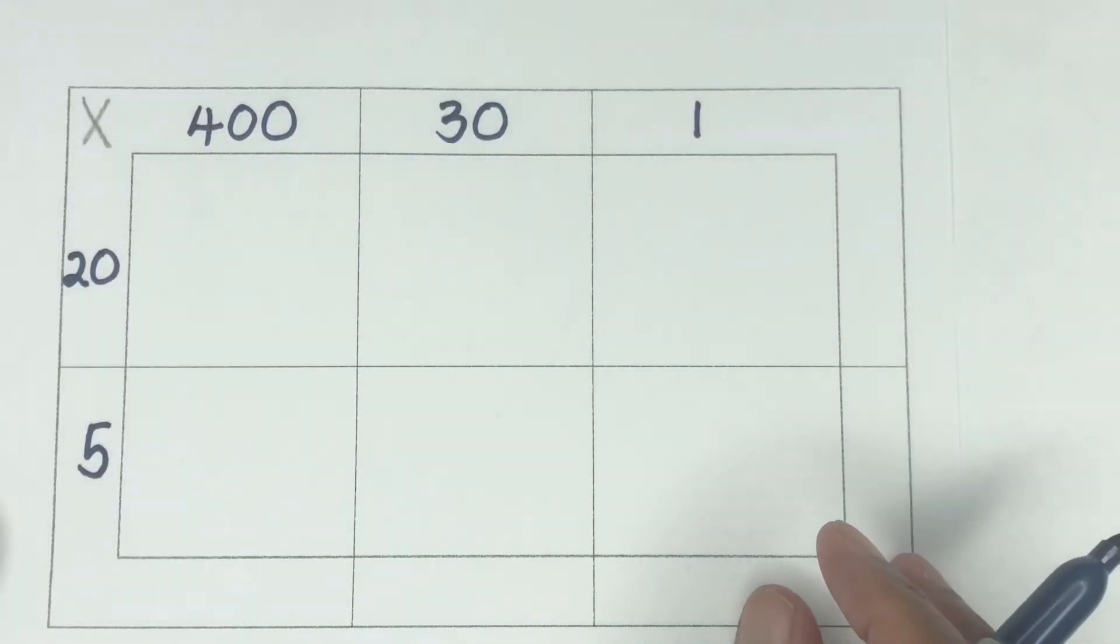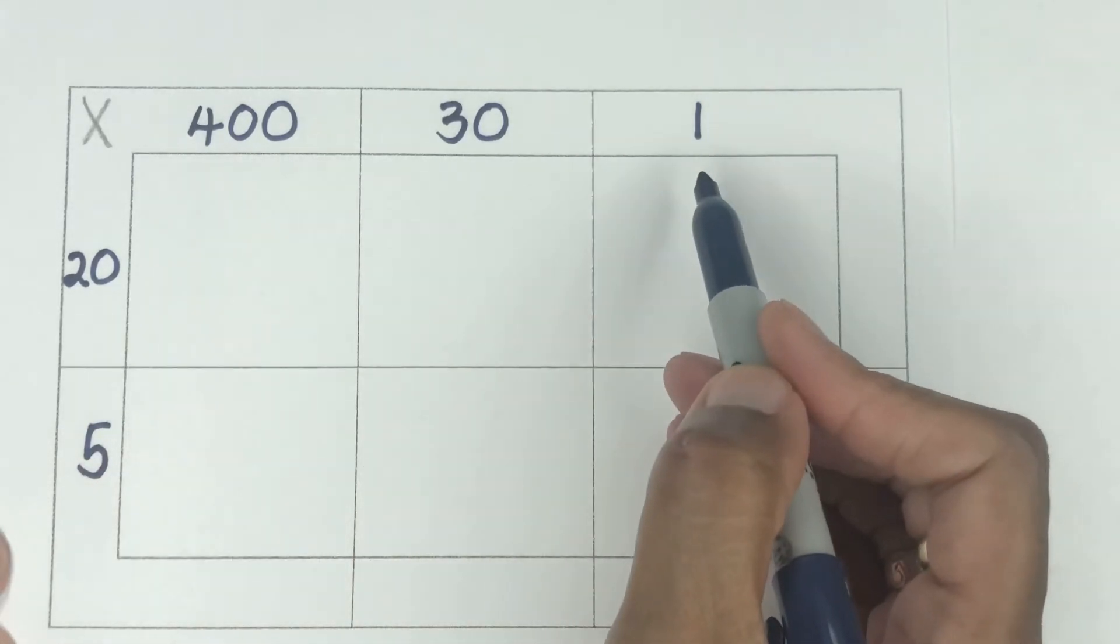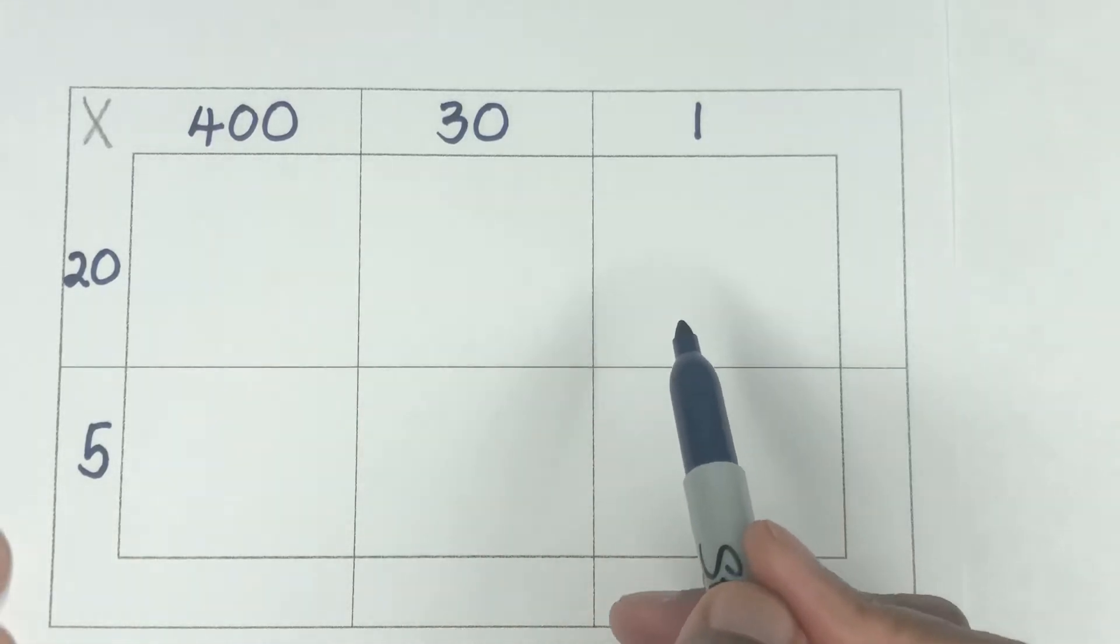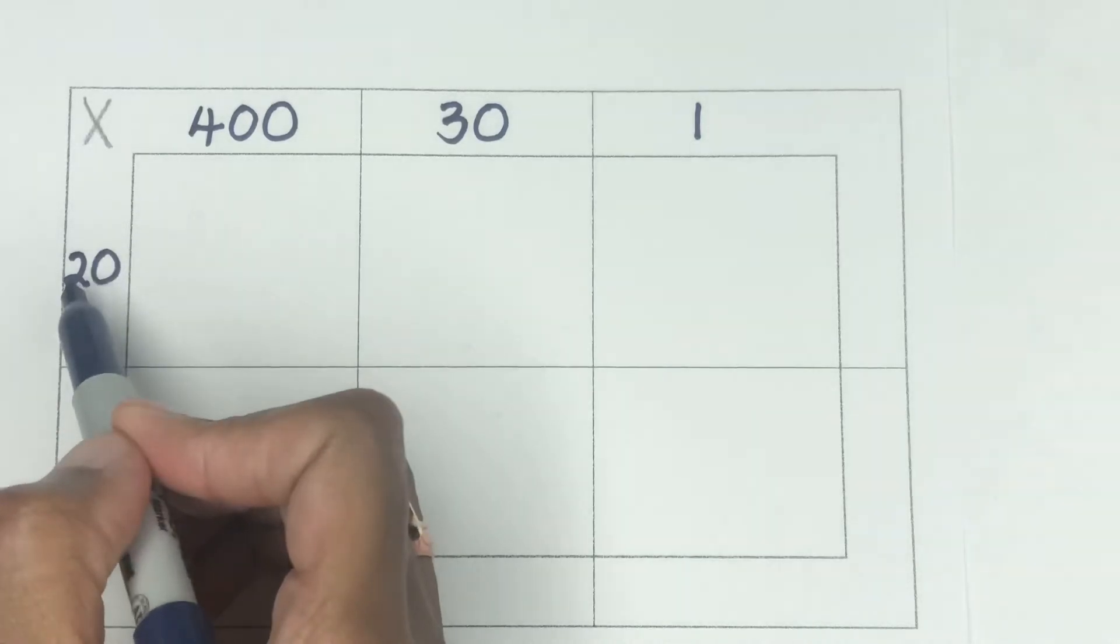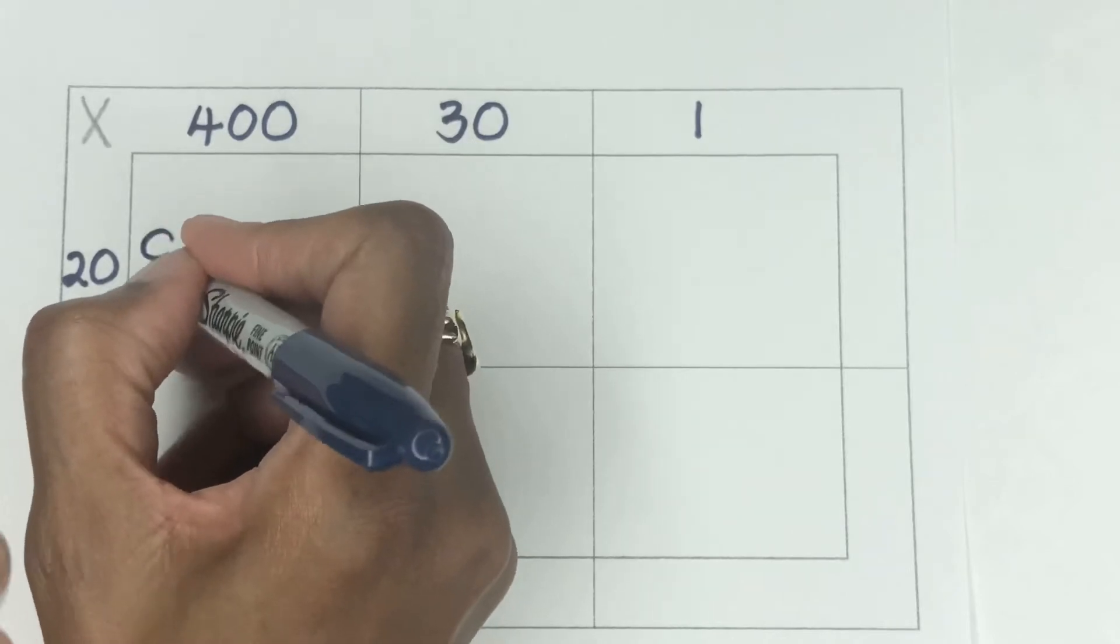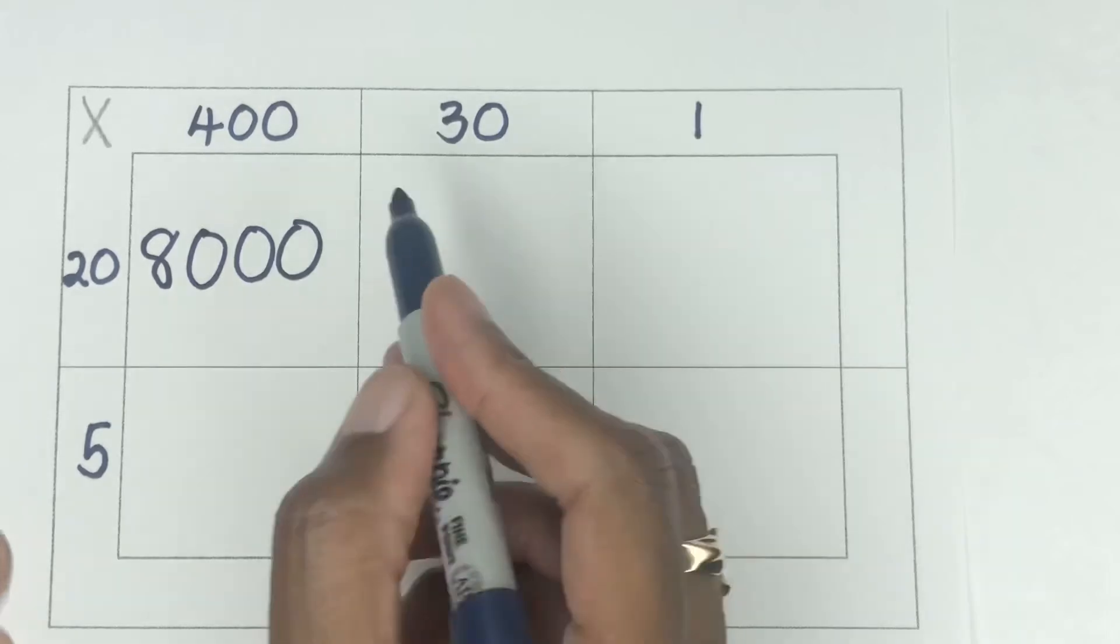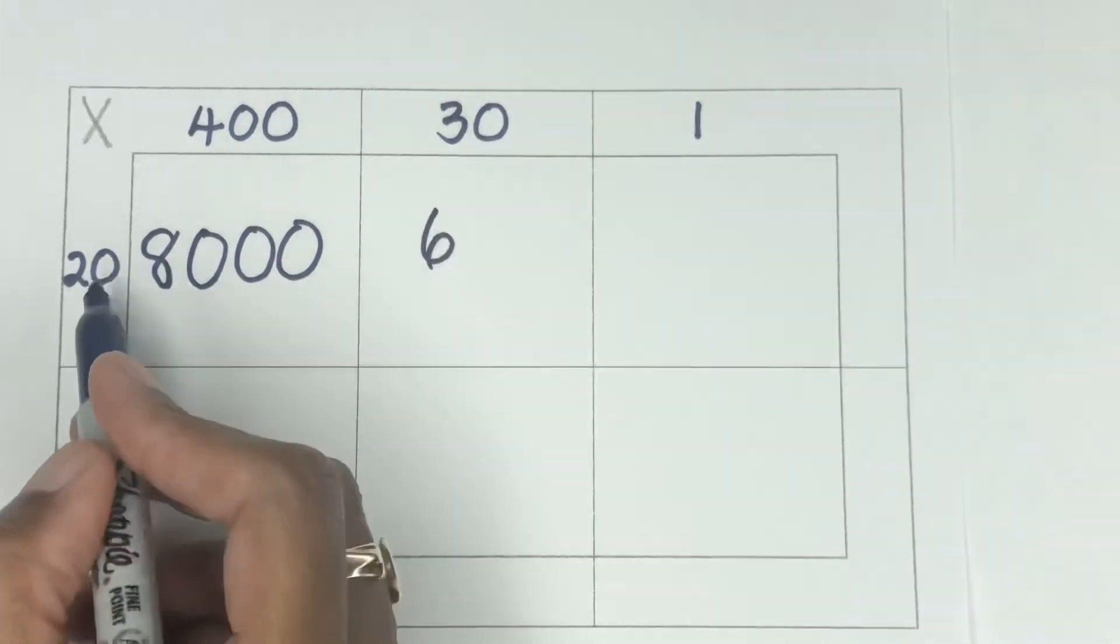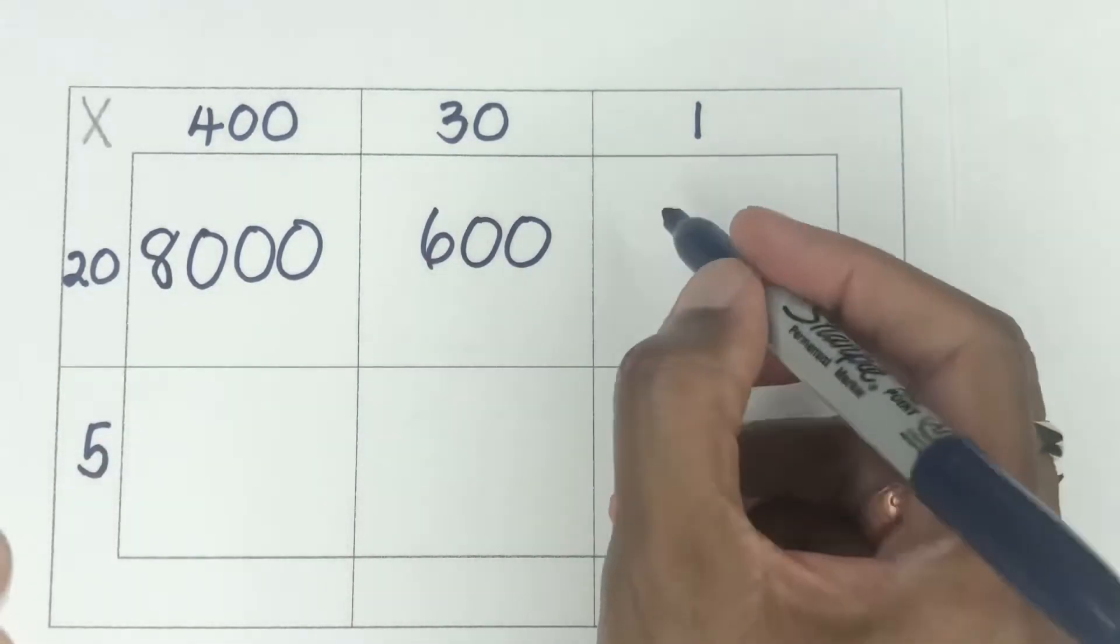And down here, we have the same thing, but in the box method. So we have 431 times 25. So you can see everything is set out in their place values. So let's go ahead and fill the boxes. So we have 400 times 20. So two times the four is eight. And then we tag on three zeros to make that 8,000. The second box, we have the two times the three is six. And then we tag on the two zeros, which will give that 600. 20 times one will give us 20.